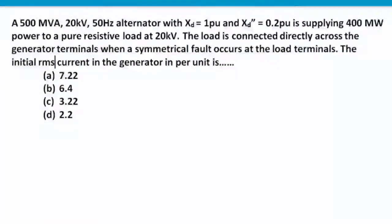Welcome to Question Bank. Today's question: a 500 mega volt ampere, 20 kV, 50 hertz alternator with Xd equal to 1 per unit and Xd double prime equal to 0.2 per unit is supplying 400 megawatt power to a pure resistive load at 20 kilovolt. The load is connected directly across the generator terminals when a symmetrical fault occurs at the load terminal. The initial RMS current in the generator in per unit is to be found.